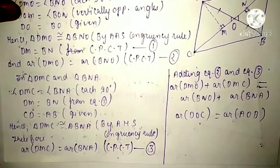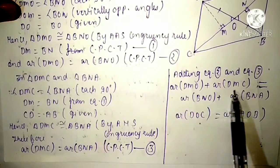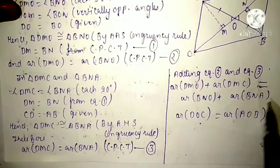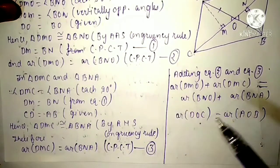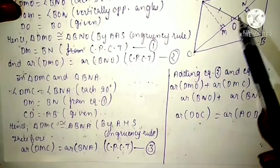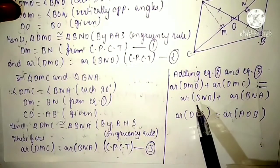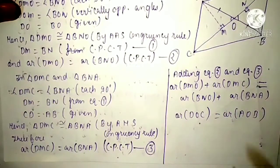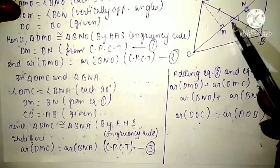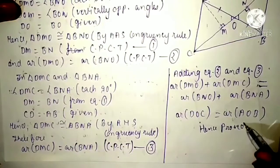Now we add equations 2 and 3. Adding the left-hand sides: area of DMO plus area of DMC. Adding the right-hand sides: area of BNO plus area of BNA. On the left, triangles DMO and DMC together form triangle DOC. On the right, triangles BNO and BNA together form triangle AOB. So area of triangle DOC equals area of triangle AOB. Hence proved — the first part is complete.